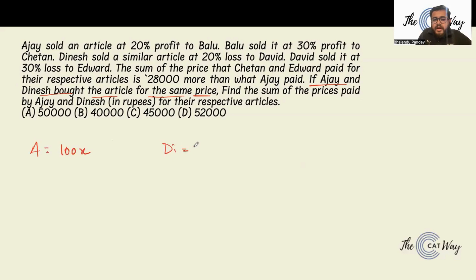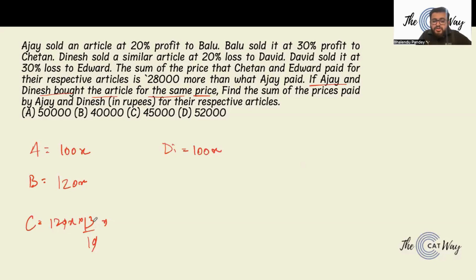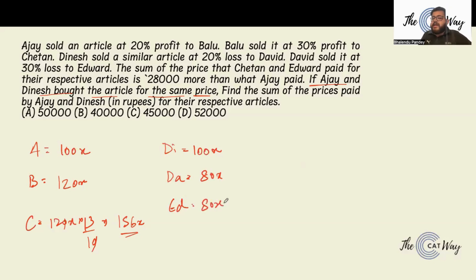Ajay sold at 20% profit to Balu, so Balu's cost price is 100x multiplied by 6 by 5, which is 120x. Balu sold at 30% profit to Chetan, so Chetan's price is 120x multiplied by 13 by 10, which is 156x. Dinesh sold at 20% loss to David, so David's price is 80x. David sold at 30% loss to Edward, so Edward's price is 80x multiplied by 7 by 10, which is 56x.